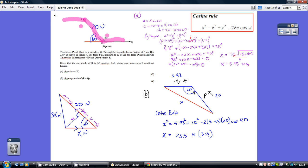And then we can just use the cosine rule. So we know that P is 20, we've just worked, we know that Q is 5.93. So substituting in we can get that the magnitude of P minus Q is 23.5 newtons.